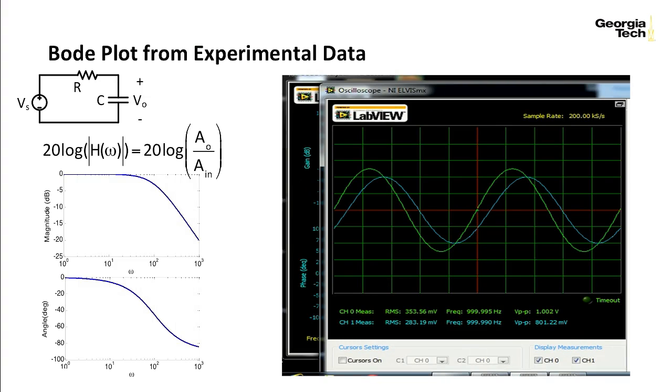Here is an oscilloscope trace of an input and an output of an RC circuit. The input is shown in green and the output is shown in blue. For this particular frequency, the frequency is at 1000 Hz. And you can see that the output amplitude over the input amplitude is a ratio of 0.8. So the transfer function at that frequency is 0.8, the magnitude of the transfer function.